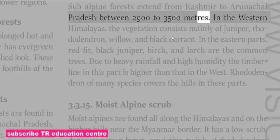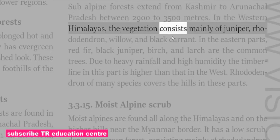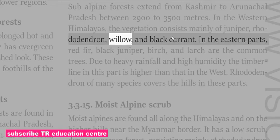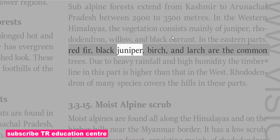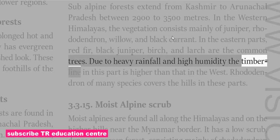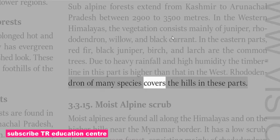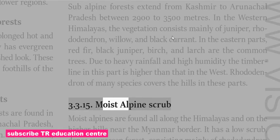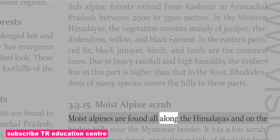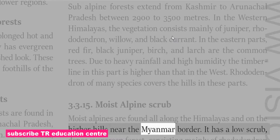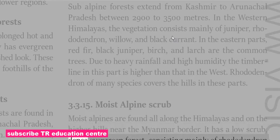Sub-alpine forests extend from Kashmir to Arunachal Pradesh between 2,900 to 3,500 meters. In the western Himalayas, the vegetation consists mainly of juniper, rhododendron, willow and black currant. In the eastern parts, red fir, black juniper, birch and larch are the common trees. Due to heavy rainfall and high humidity, the timber line in this part is higher than in the west, and rhododendron of many species covers the hills.